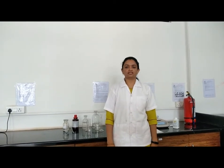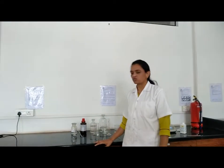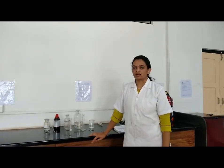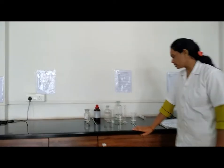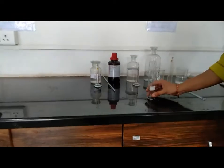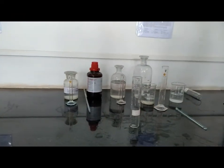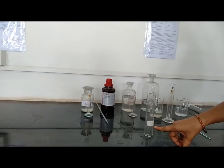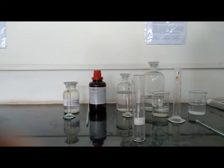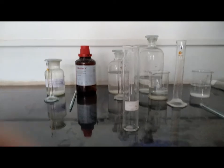Welcome in chemistry lab. So today we are going to do the limit test for iron. So let's start with actual practical. First of all we have to prepare standard solution and then prepare test solution. First of all take a Nessler cylinder and label it as standard solution. So let's start with procedure.